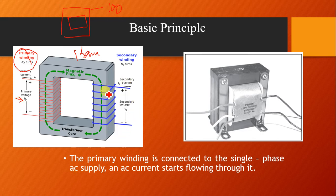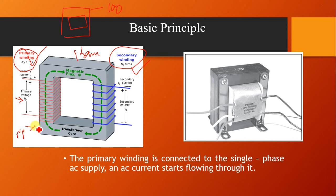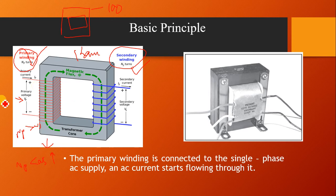The secondary coil is wound on the other part of the core, called the secondary winding. The number of turns in the primary is Np and in the secondary is Ns. If Np is greater than Ns, the transformer is called a step-down transformer. If Np is less than Ns, it is called a step-up transformer. So: Np greater than Ns means step-down, and Ns greater than Np means step-up.